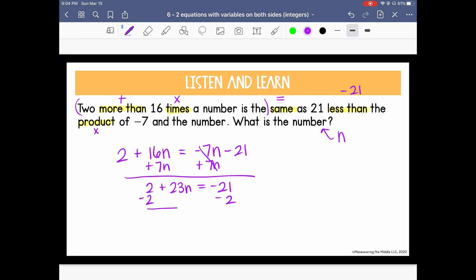which gives us 23n equals negative 23. And the last step is to divide both sides by 23. So we get n is equal to negative 1.